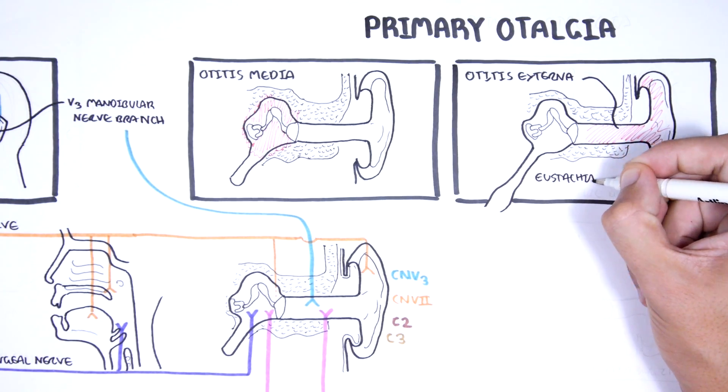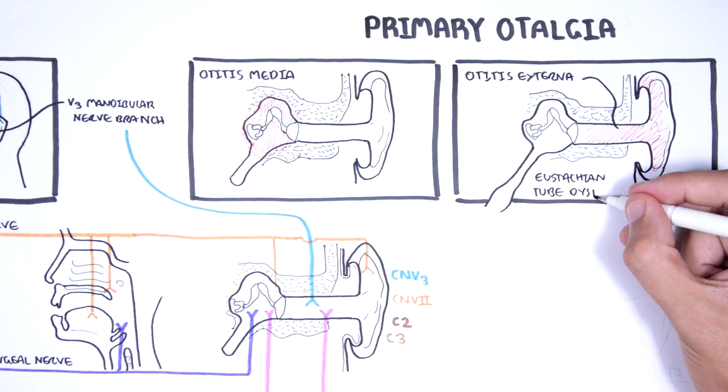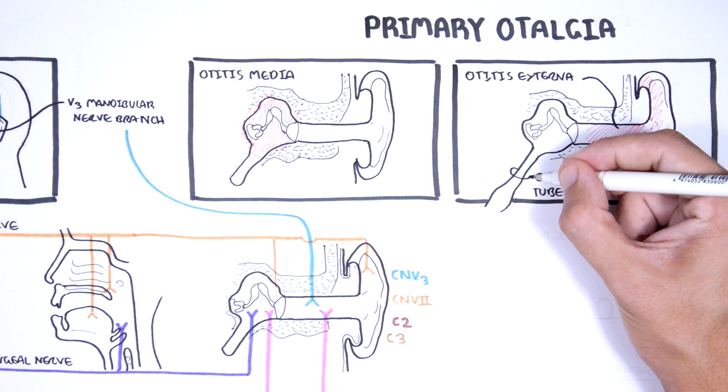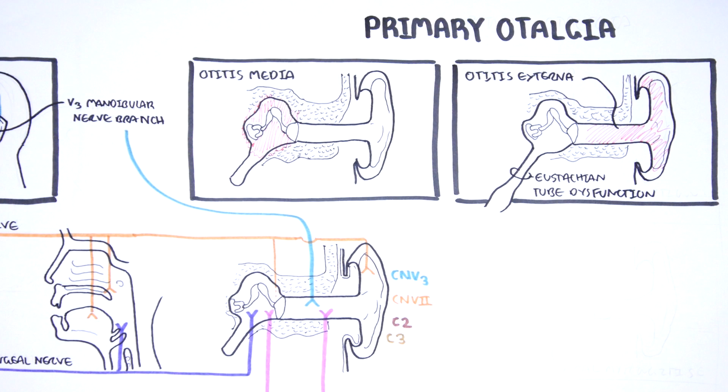Another cause of primary otalgia is eustachian tube dysfunction, due to viral infection for example, and this will cause swelling of the eustachian tube and thus ear pain.